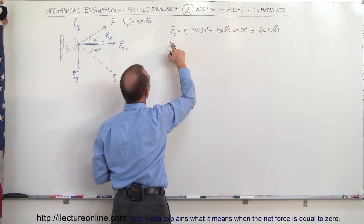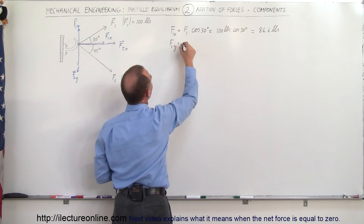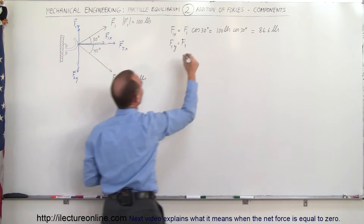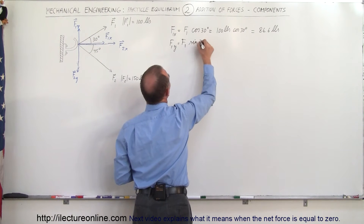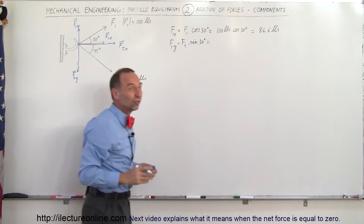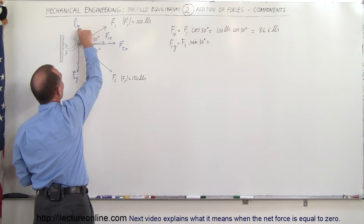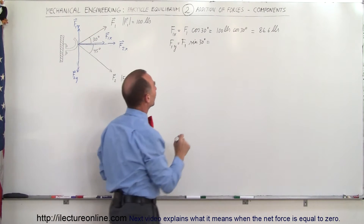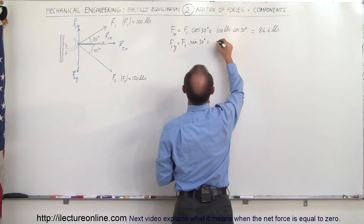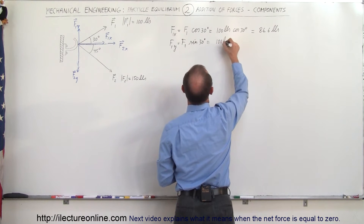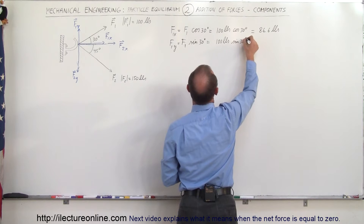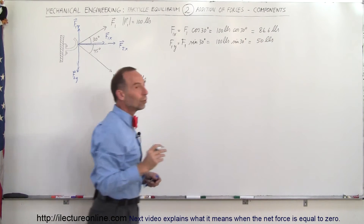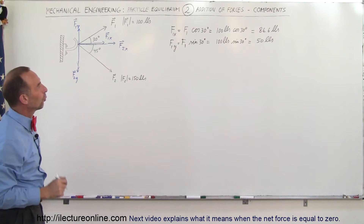F1 in the Y direction — that's equal to F1 times the sine of 30 degrees, because this would be the opposite side to the angle. Remember with vectors you can move vectors any place you like, so I can take this component here and move it over to show that it's opposite to the angle, therefore it becomes sine of 30 degrees. That would be 100 pounds times sine of 30, which is one half, which is 50 pounds. So those are the X and Y components of force 1.